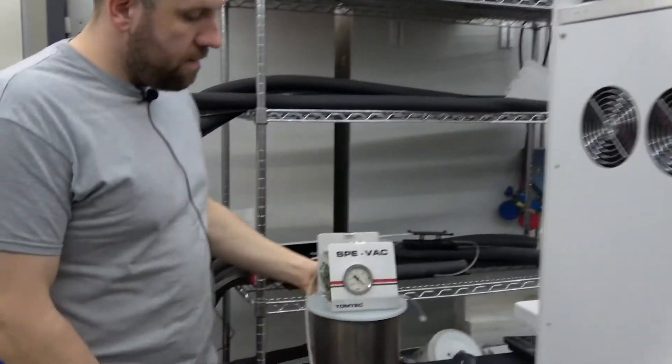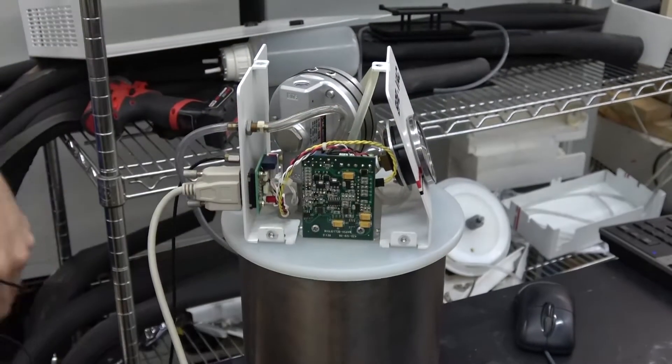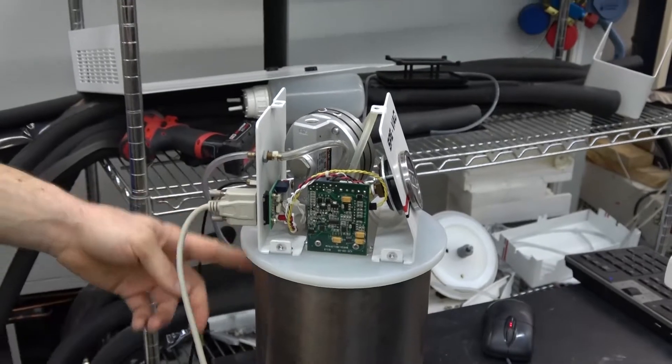Here is the back trap that's used for solid phase extraction, with the hood off so you can see inside. It's got a couple valves and a float switch.